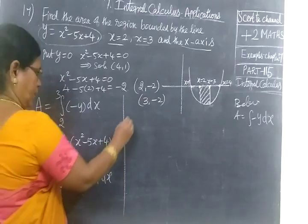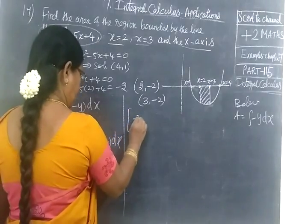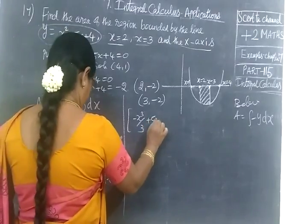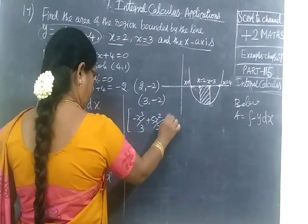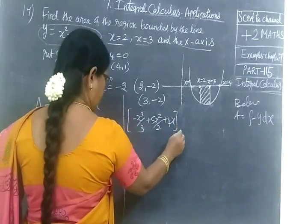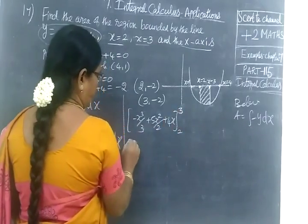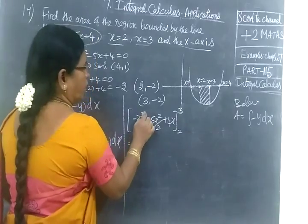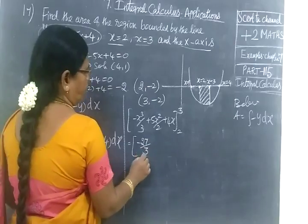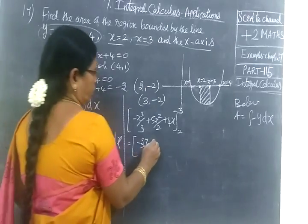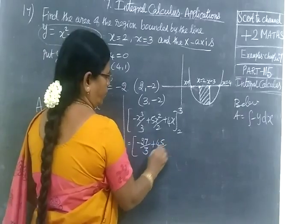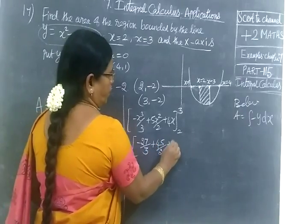Now integrate: from 2 to 3 of minus x squared plus 5x minus 4 dx. The upper limit gives: minus 27 by 3 plus 5 times 9 by 2 minus 4 times 3, which equals minus 9 plus 45 by 2 minus 12.